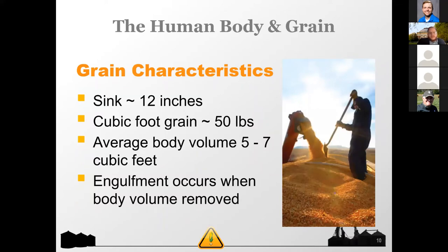Generally with grain, because it's a granular object, just walking through it you naturally sink about 12 inches — that's just a general average. As a human body, you are essentially just two or three bushels. So if you get trapped in a grain bin and the auger is flowing at 4,000 bushels per hour, you can realize how quickly you can get entrapped or actually engulfed in such a situation.